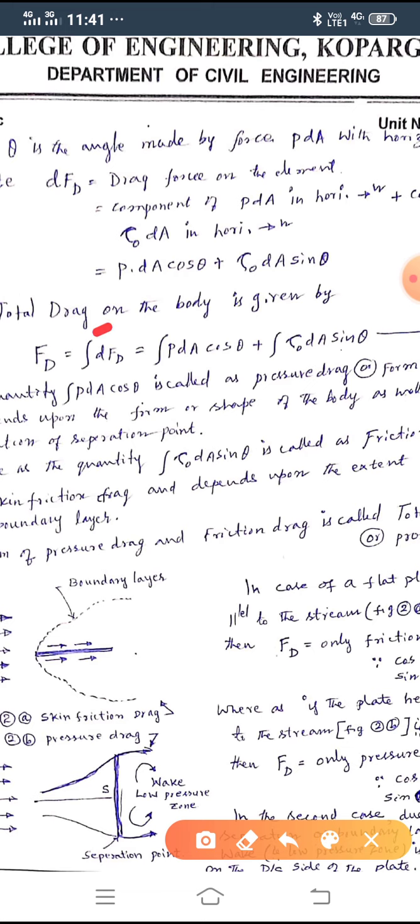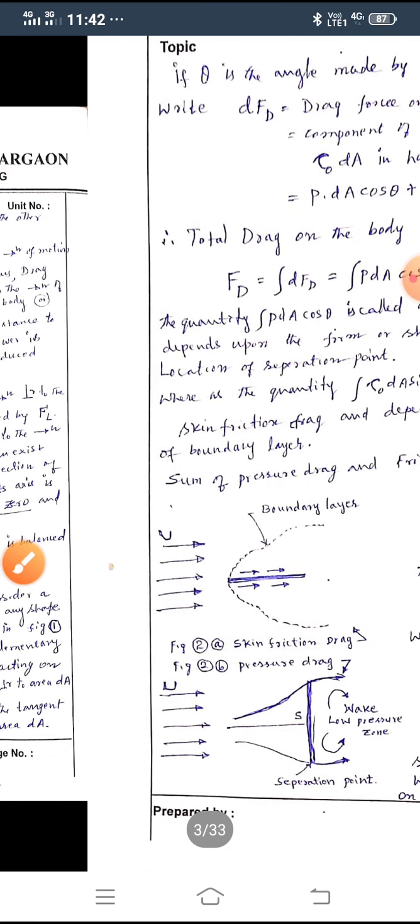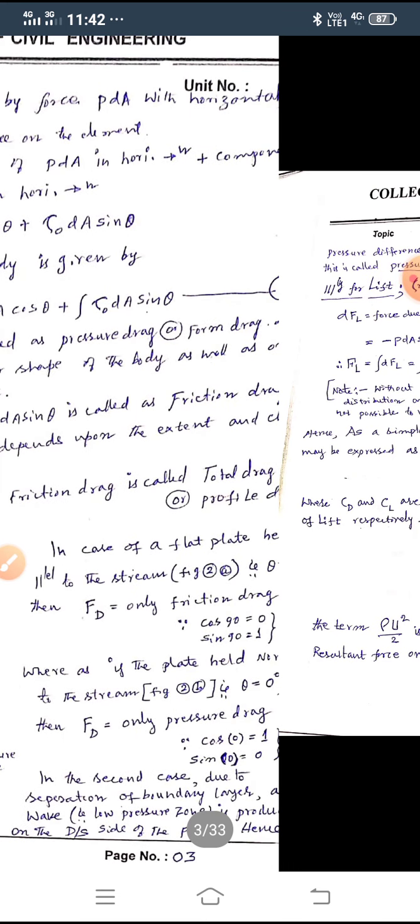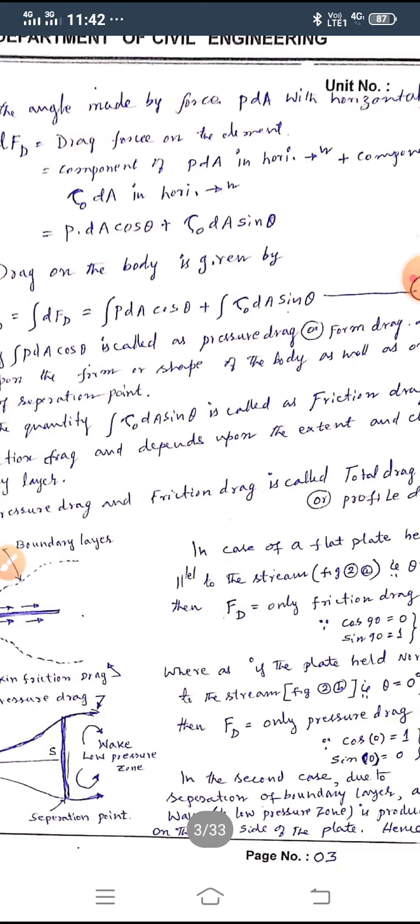Now, dFD is equal to PDA cos θ plus τ₀DA sin θ, therefore, total drag on the body, when you integrate it, you will get it. So, FD is equal to integral PDA cos θ plus integral τ₀DA sin θ. Now, the quantity PDA cos θ is called as pressure drag, whereas τ₀DA sin θ is known as frictional drag or skin friction drag.